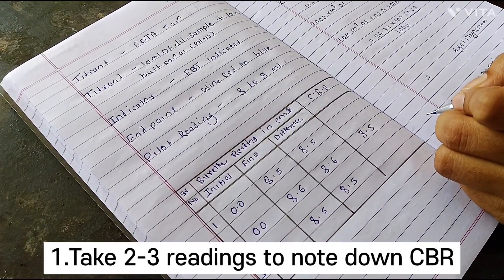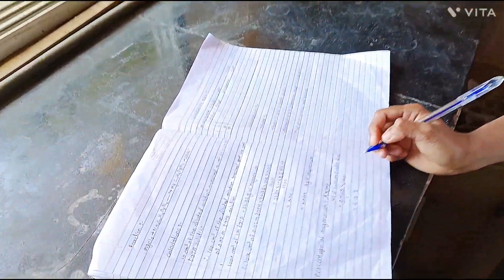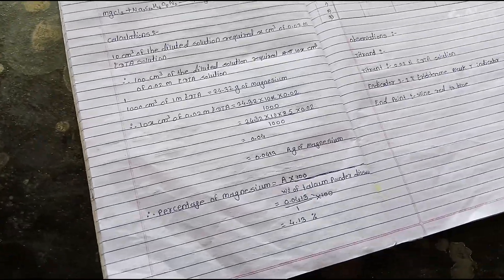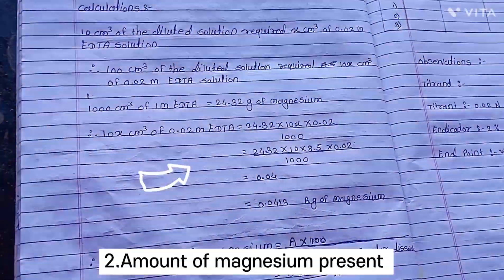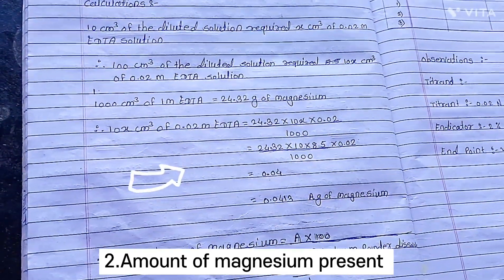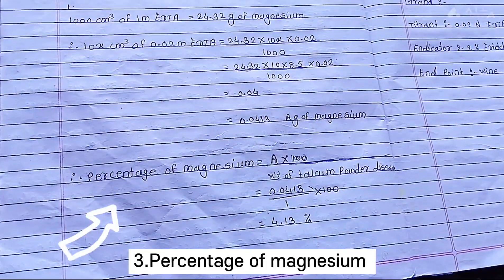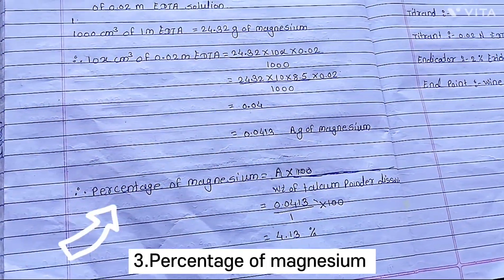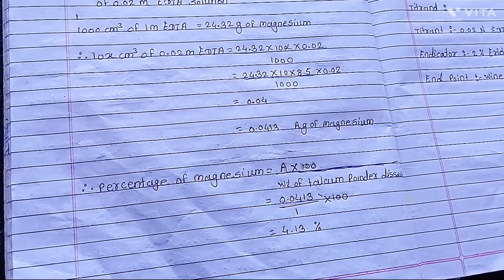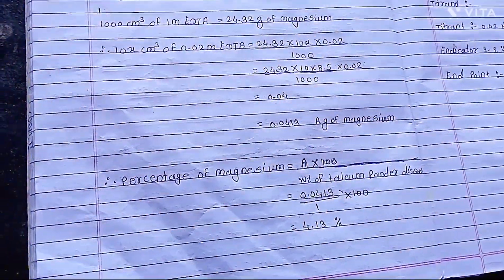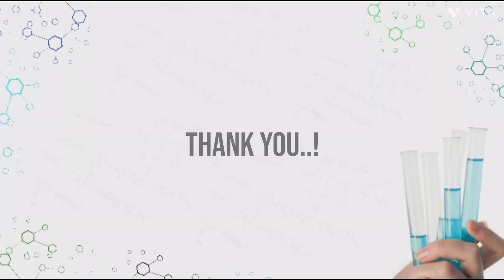The constant burette reading (CBR) is 8.5 cm³. By substituting CBR = 8.5 cm³ in place of X, you will get the amount of magnesium as 0.0413. Calculate the percentage of magnesium by substituting for A. The weight of the talcum powder given is 1 gram, and therefore the percentage of magnesium in the given talcum powder is 4.13%.